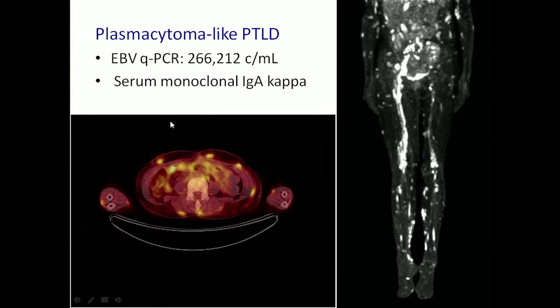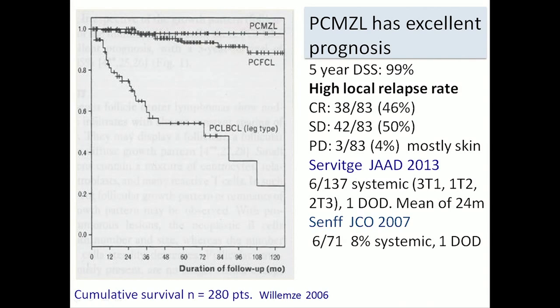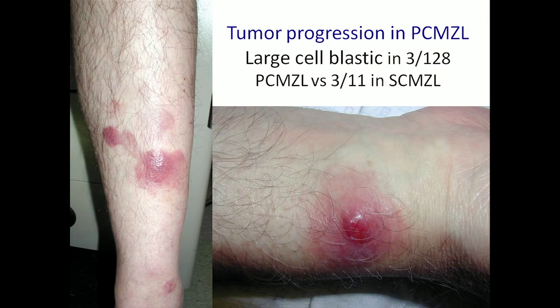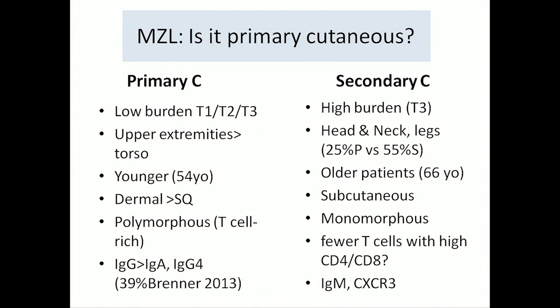The prognosis of primary cutaneous MZL patients is excellent — five-year disease-specific survival is 99%. In Europe, a higher incidence of bone marrow involvement is seen; I think those patients were not properly staged early on. Very seldom do they undergo large cell transformation. For distinguishing primary versus secondary cutaneous MZL: secondary cases often go to the head and neck area, tend to be in older patients, are more subcutaneous, with a more monomorphous pure tumor population. If you do IgM, it's often positive in secondary versus primary cutaneous, which more often expresses IgG or IgA isoforms.